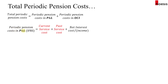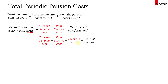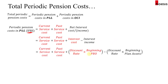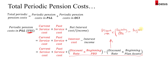Under IFRS, the periodic pension cost in the P&L is current service cost plus past service cost, plus the net interest cost or income. The net interest cost or income can be split into interest cost minus interest income: interest cost is the discount rate times the beginning PBO, and interest income is the discount rate times the beginning plan assets. Factorizing the discount rate gives a quick way to derive net interest cost or income.